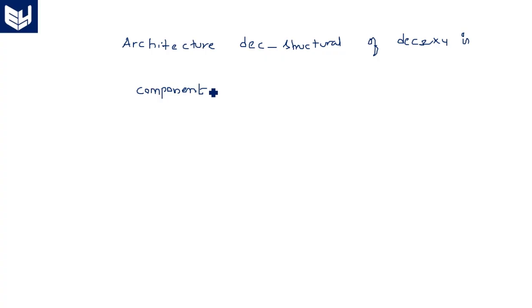Component AND_gate is port of A, B, C in std_logic because it is three input AND gate, and Y out std_logic. End component. We can also add component name.